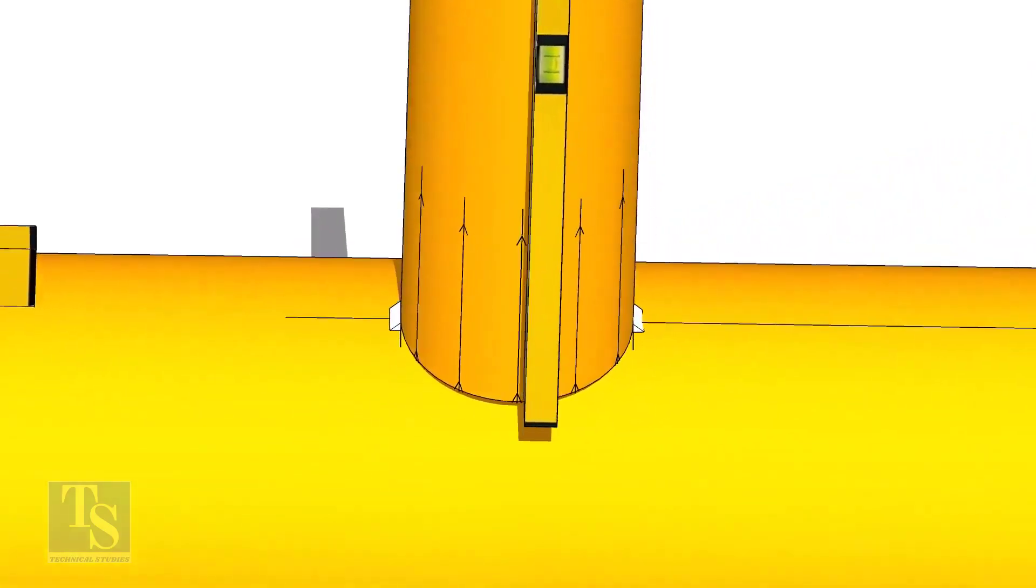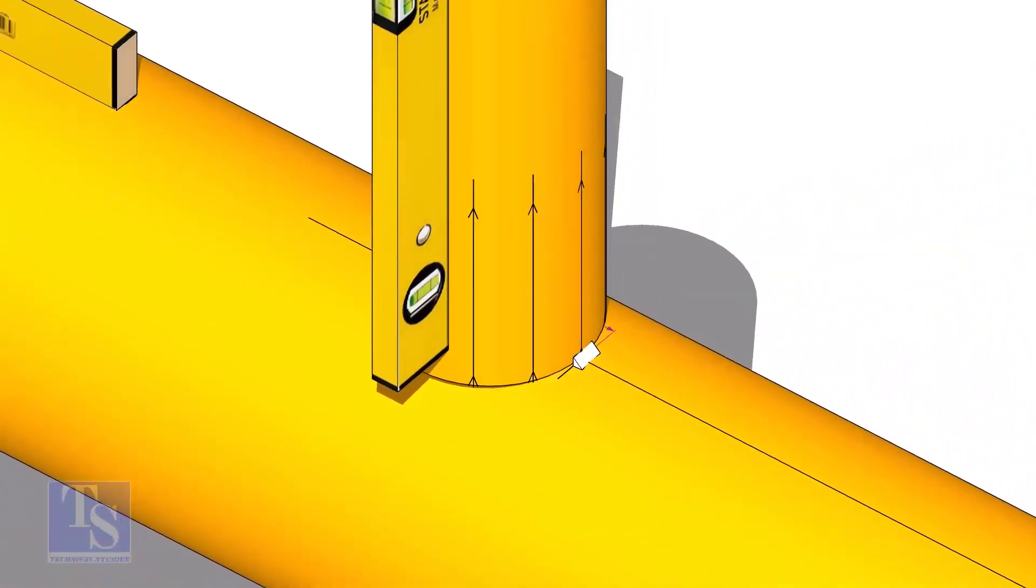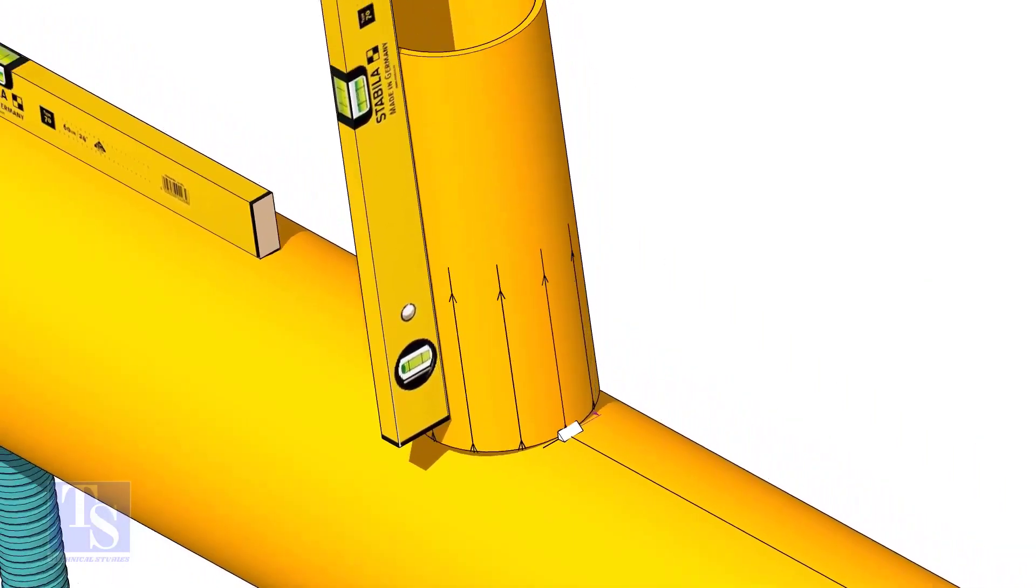Now make sure the pipe header and the branch are horizontally and vertically level. If required, strengthen the tack weld.